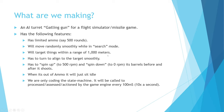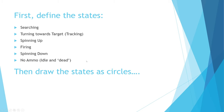The first thing to do is define what the states are. Looking at this list of features, we have: searching mode, turning towards the target which we call tracking, spinning up the barrels, firing bullets, spinning down, and there's also going to be a no ammo idle state. These are the six possible modes that our gun will ever be in — these are the different states.